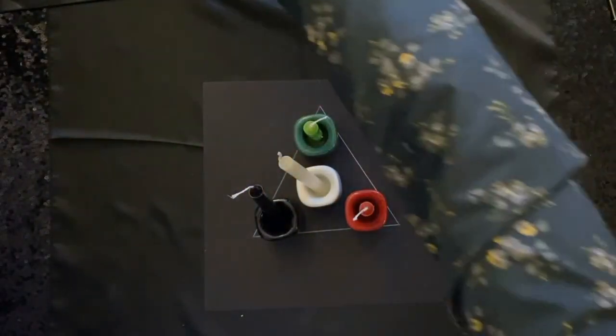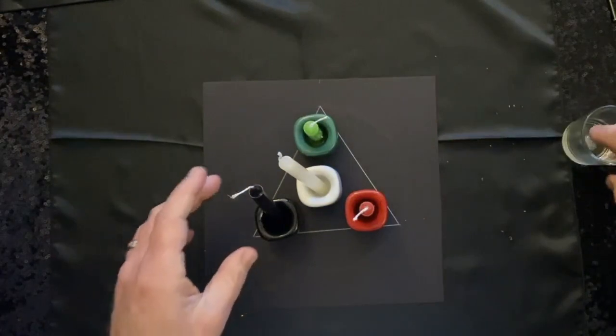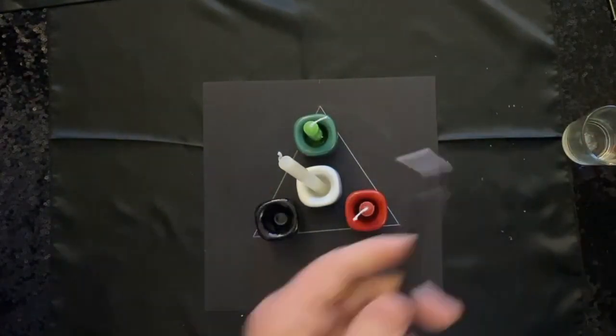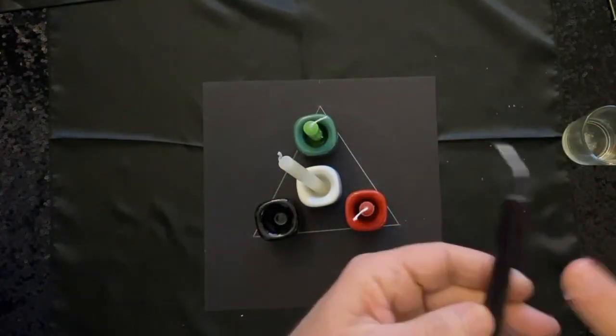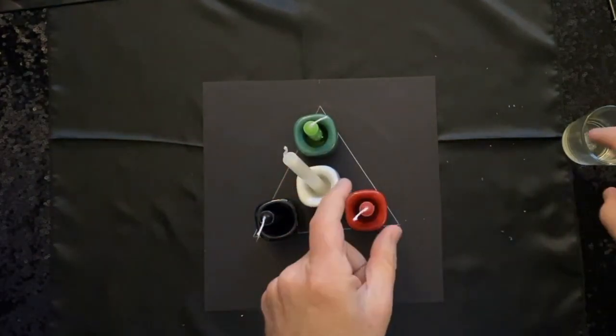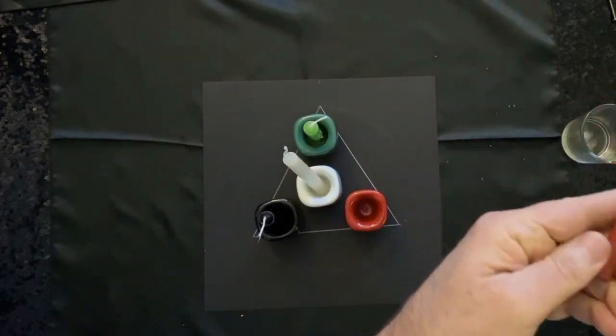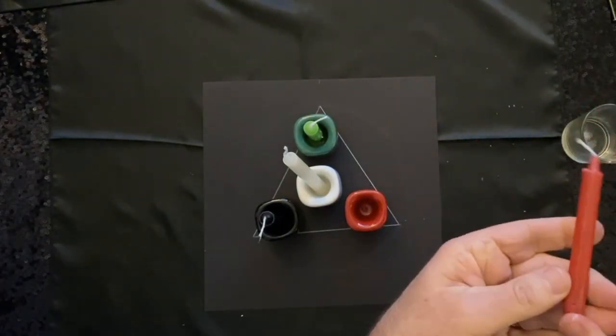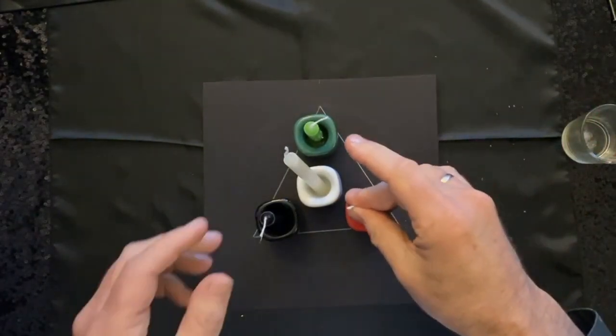And then we want to anoint each one of those thinking of those things. Again, you could probably have done that right after, but I'm doing it one at a time here. And then, so I'm in the same order though, we'll do the Saturn candle, then the Mars candle.